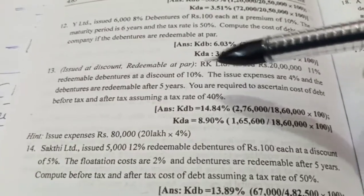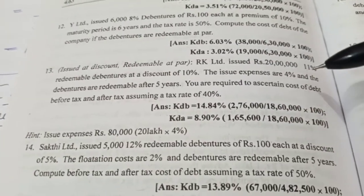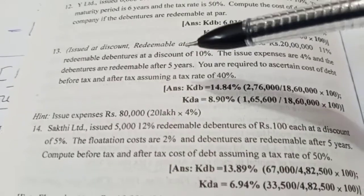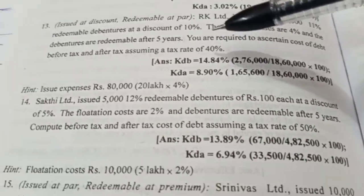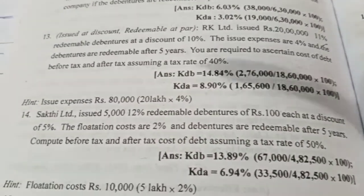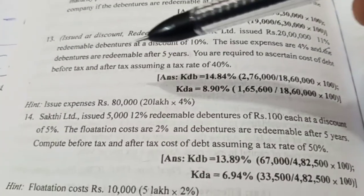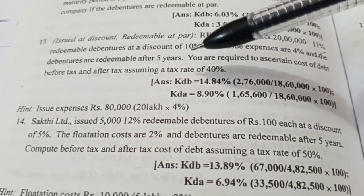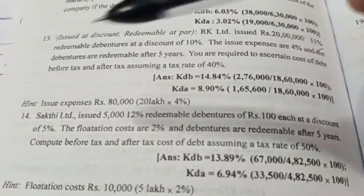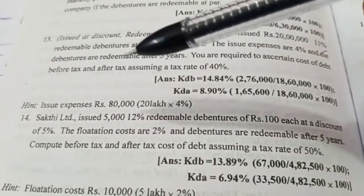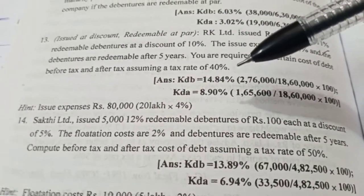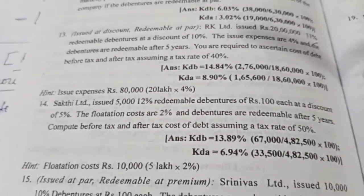So here is a question. RK Limited issued rupees 20 lakh, 11% redeemable debentures at a discount of 10%. The issue expenses are 4% and the debentures are redeemable after 5 years. You are required to ascertain cost of debt before tax and after tax assuming a tax rate of 40%.